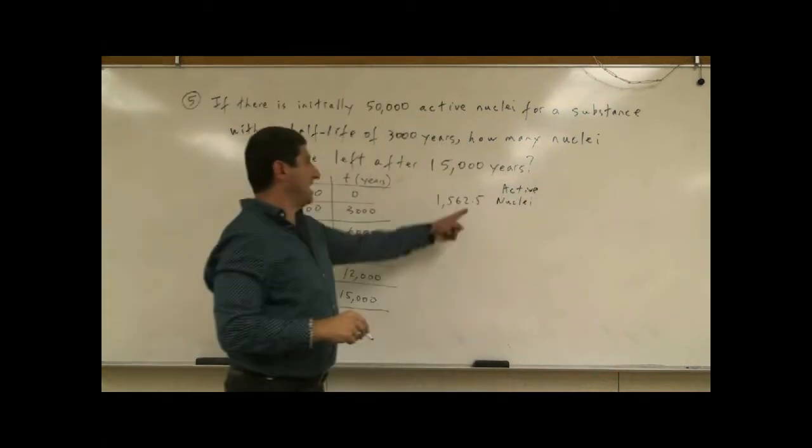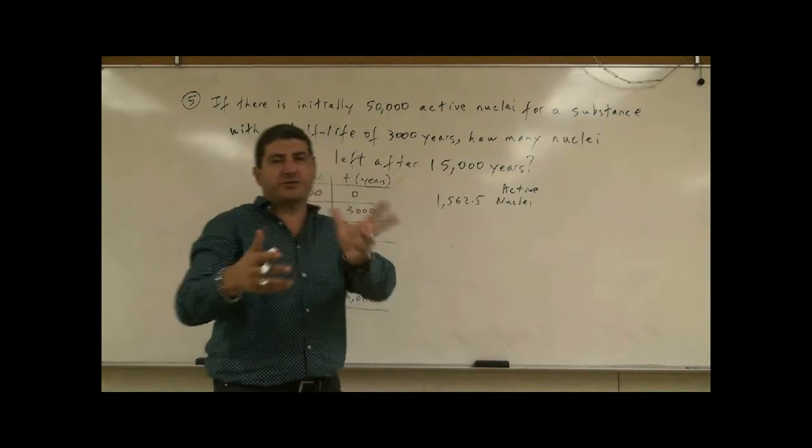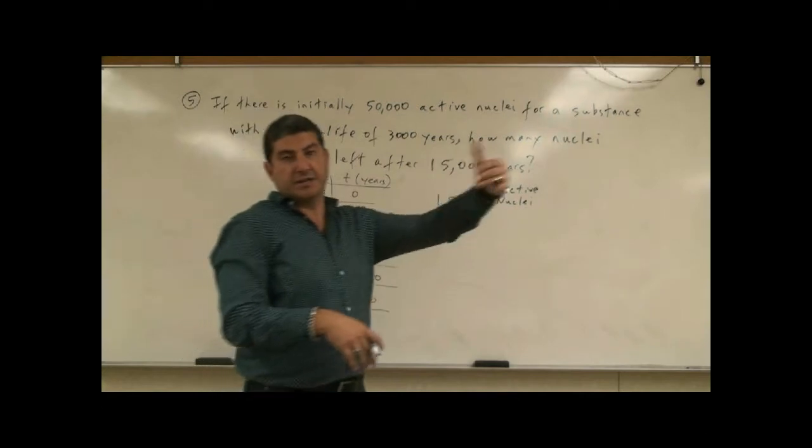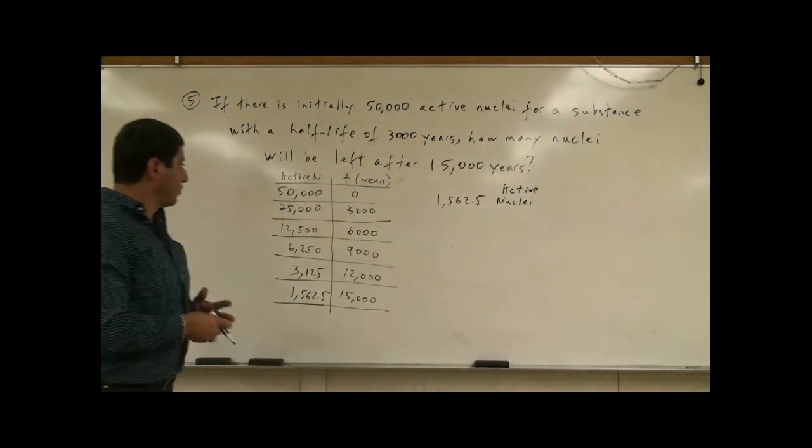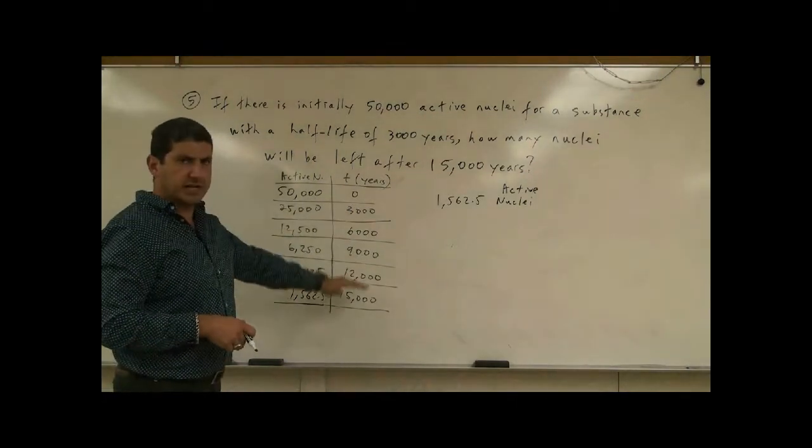Well, you can't really have a half-active nuclei, so it's probably 1,563 or 1,562. So this is statistical probability that there's one little bit over that or under that. Well, what's the other way we could approach this instead of thinking of it like a table?